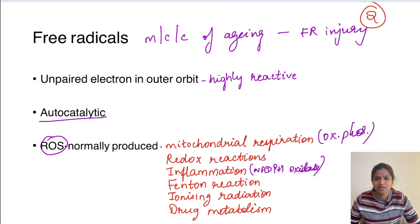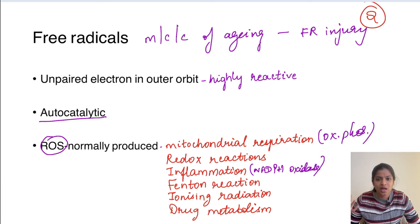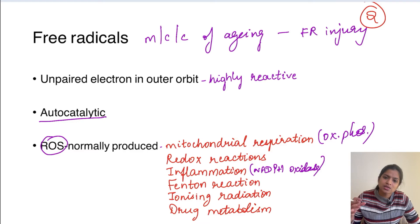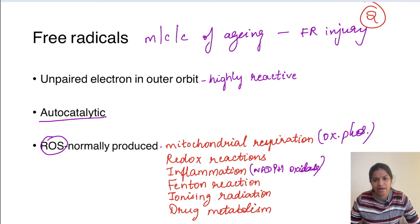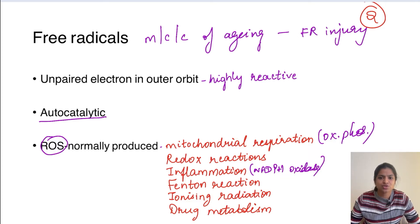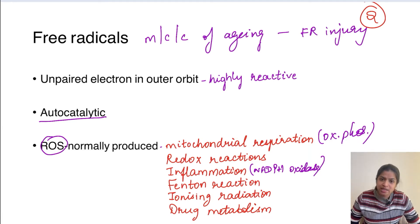NADPH oxidase is an oxidase enzyme which results in the formation of free radicals. Fenton's reaction is one in which increased amounts of iron lead to free radical production - iron accumulation is harmful. The same applies to other transition metals like copper. Both iron and copper have been implicated in free radical formation. Additionally, ionizing radiation and certain drugs, when metabolized, can produce free radicals.